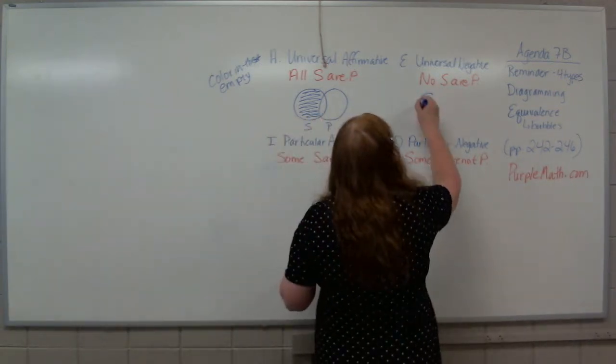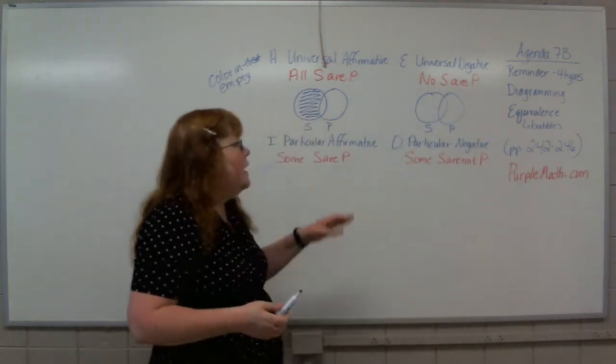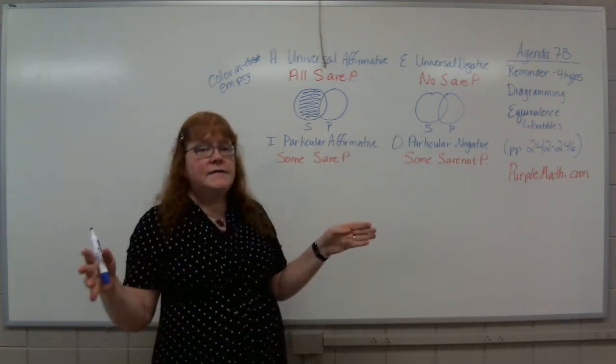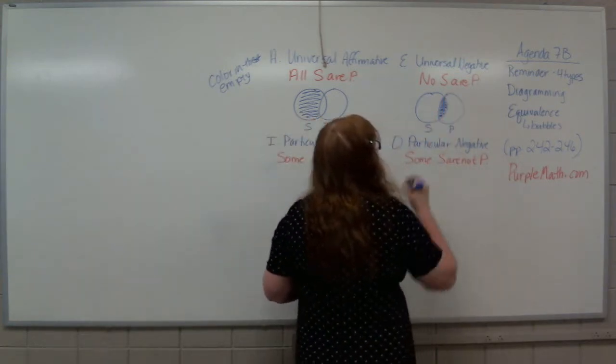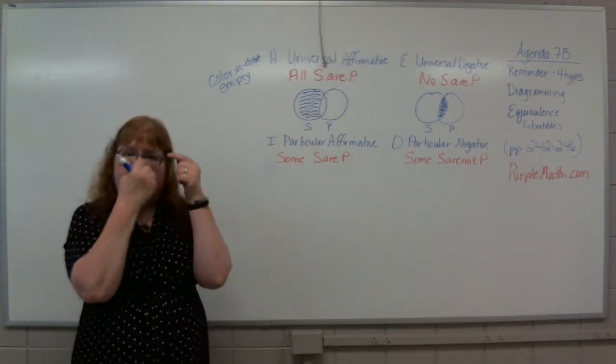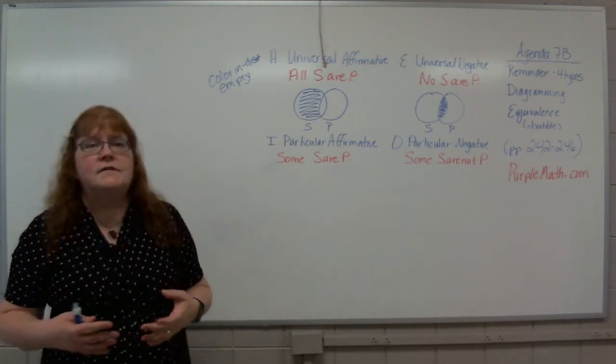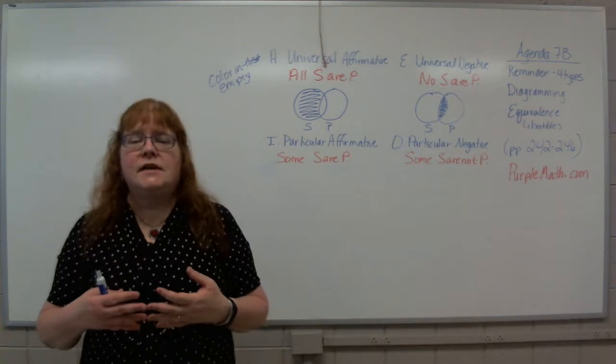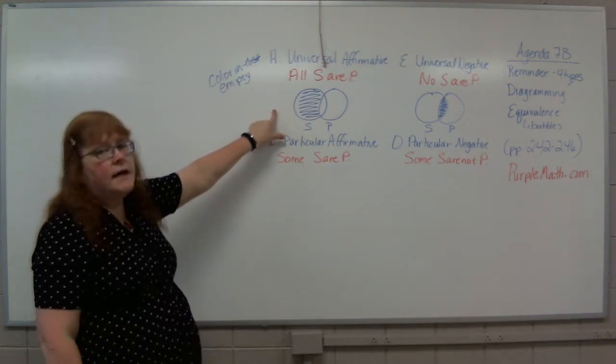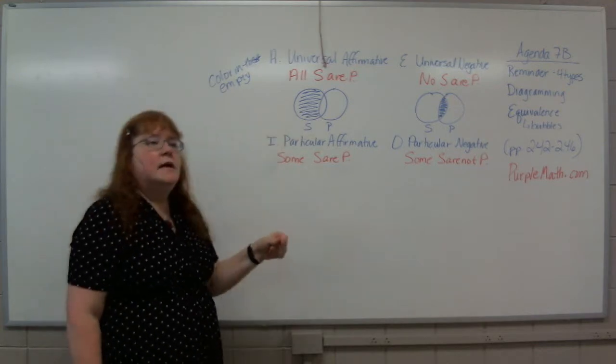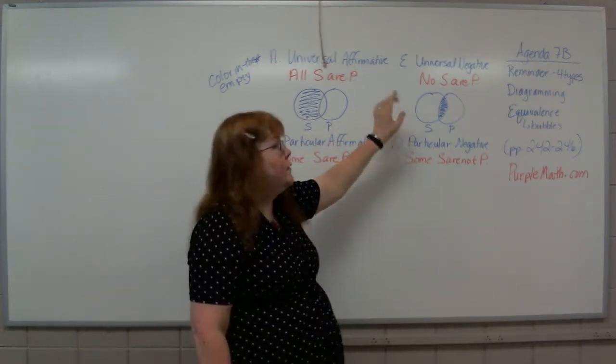Whichever way or your own version of that helps you understand and remember that we're drawing, we're coloring in the part that's empty. When we're talking about our universals, that's the big deal up here. Color in the empty. We're going to do something slightly different when we get down here. So we have two different sets of rules. Now if I'm looking at my no S are P, draw my two circles again, label them. No S are P. None of my sailboat people want to be paddleboat people. So the room that's empty, or the floor I can see, is this eyeball section in the middle. So that's my drawing.